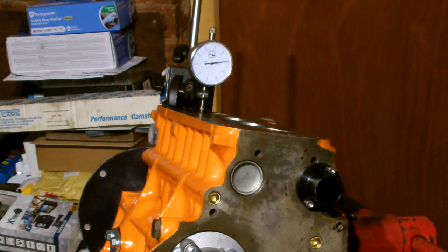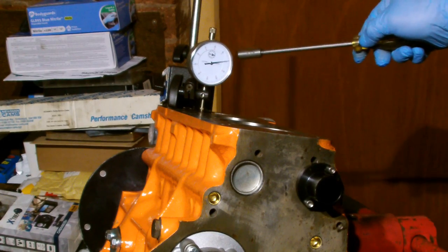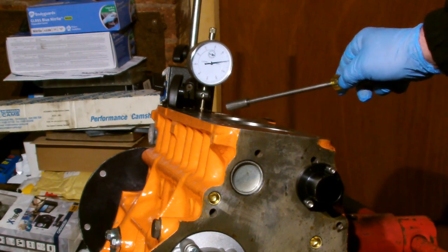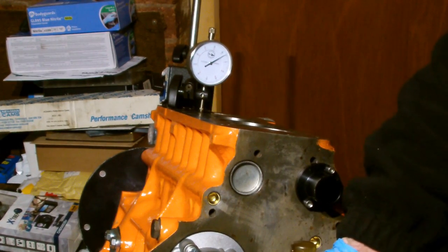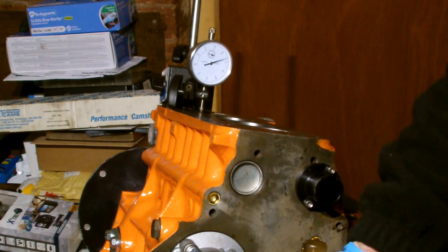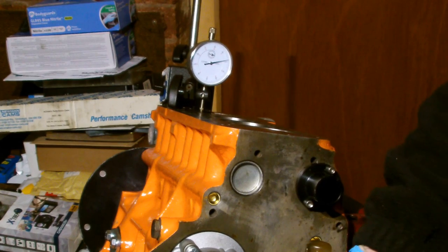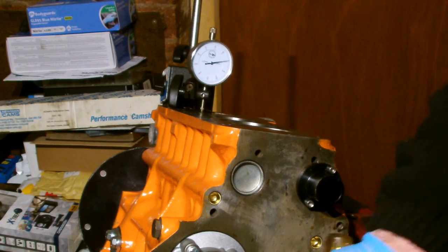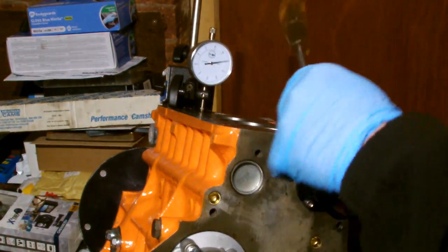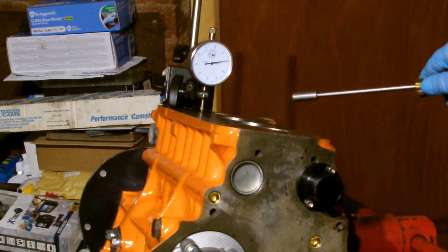First thing you need to do is set up your DTI gauge or dial test indicator to determine top dead center on number one piston. You'll see the gauge moving now. When it moves down and starts going the other way, you need to move it back until it stops. When it goes to a central point, that's when you've got top dead center.